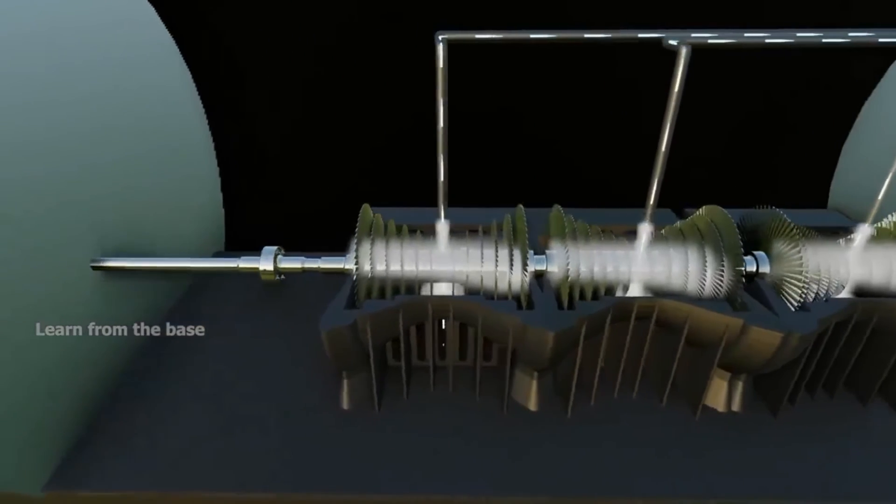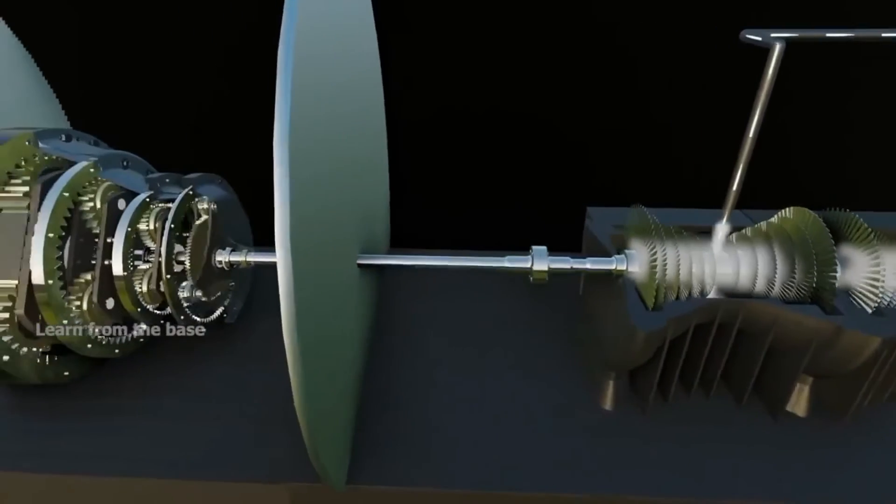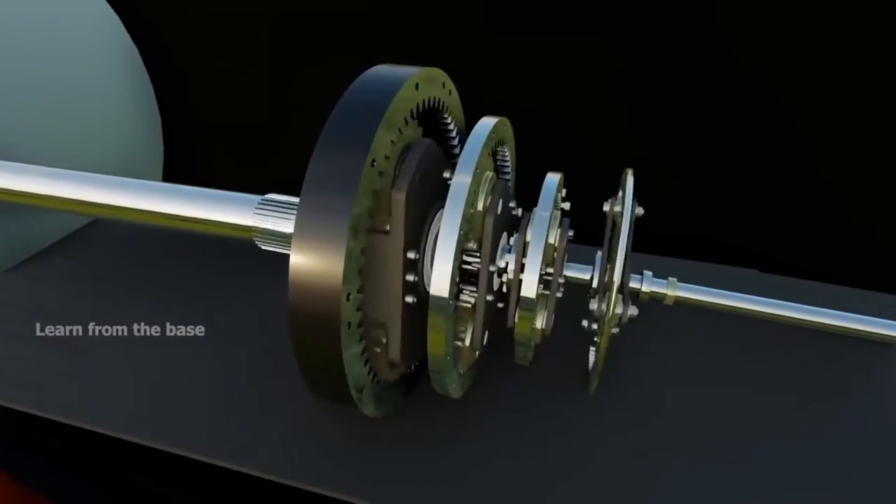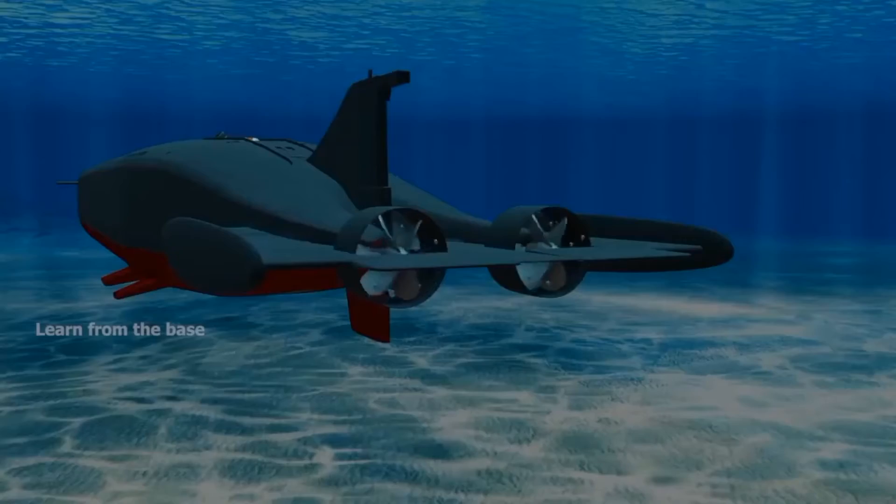Then the rotating turbine turns a massive gearbox. Then its power is transmitted to the propeller.